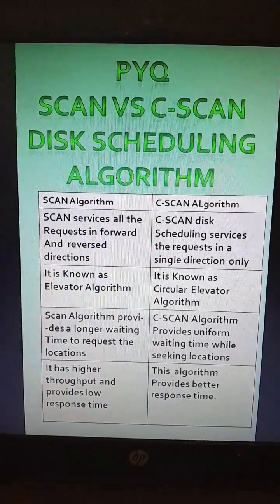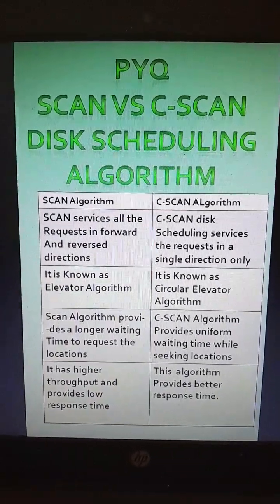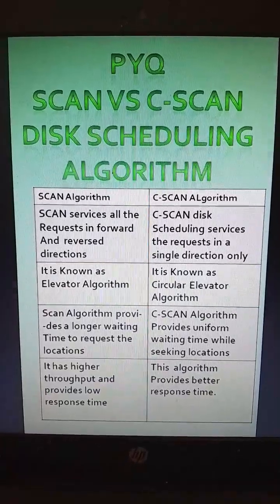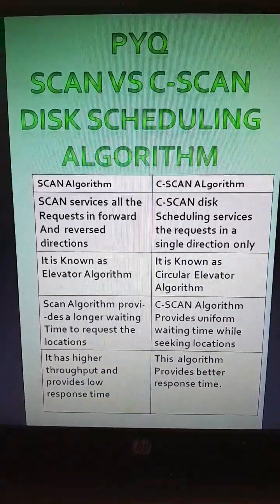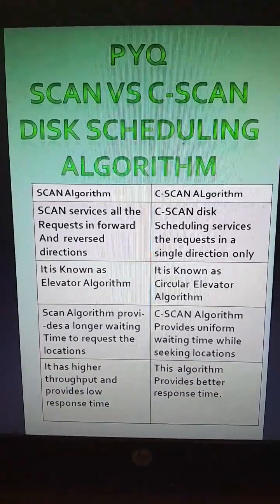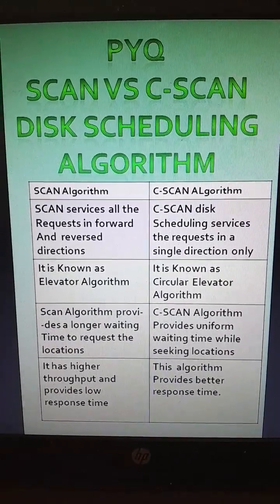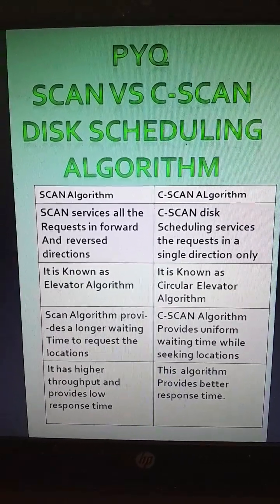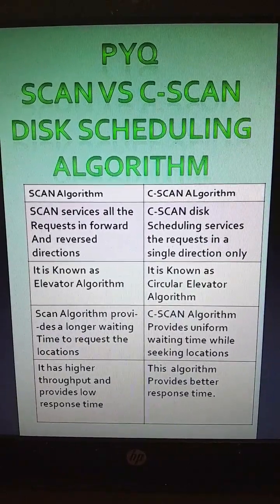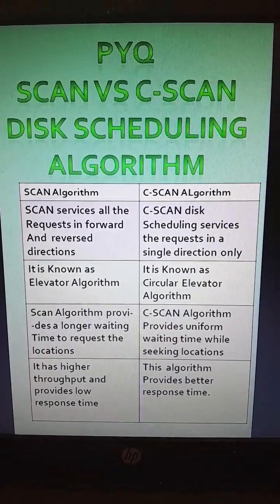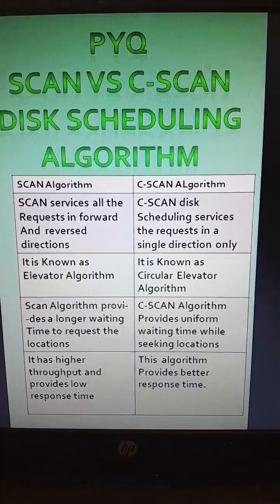Let's discuss a previous year question: SCAN vs. C-SCAN disk scheduling algorithm. The SCAN algorithm services all the requests in forward and reverse directions, while C-SCAN disk scheduling services requests in a single direction only.